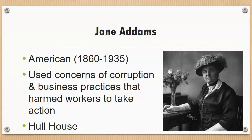Jane Addams grew up in Chicago and saw many examples of government corruption and business practices that harmed workers. When she was on holiday in London, she saw work being done to help the poor, which inspired her to return to Chicago and open Hull House — a service providing help to people who needed it, whether immigrants, the sick, poor, or elderly. She focused on problems caused by an imbalance of power among social classes and invited University of Chicago sociologists to witness the effects of industrialism firsthand. She was also very active in women's suffrage and peace movements and was the first sociologist to receive the Nobel Peace Prize in 1931.